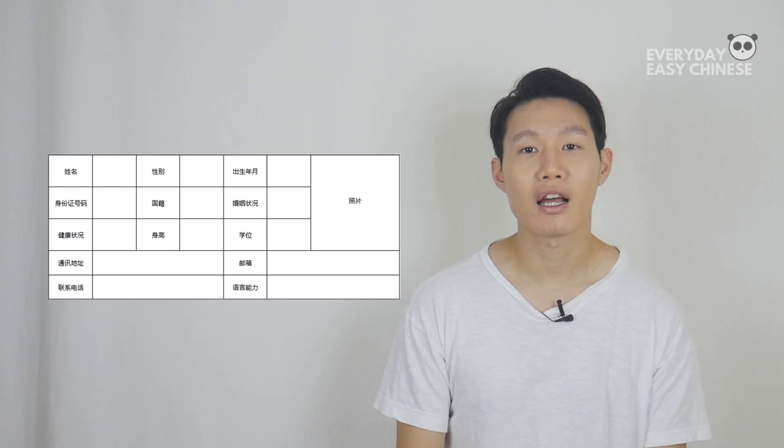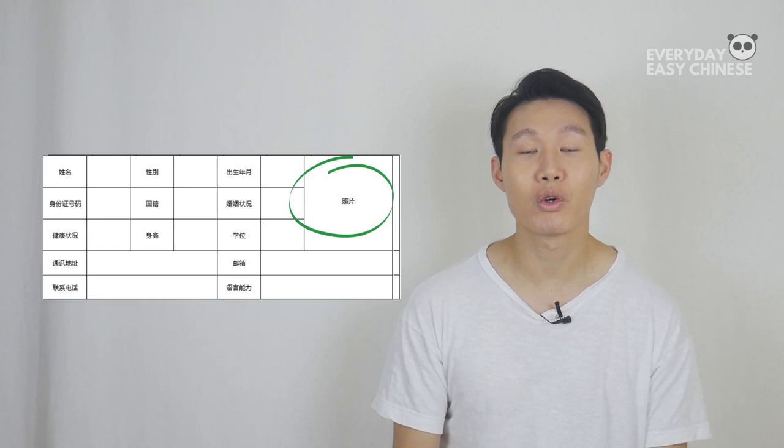So let's go through each section that you need in a Chinese resume one by one. The first section is the personal information section — 個人信息 — which means personal information.